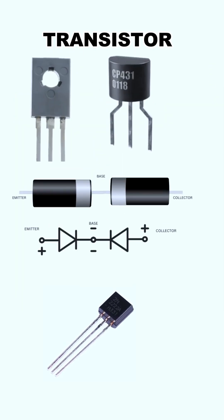A transistor consists of two PN diodes connected back to back. It has three terminals: emitter, base, and collector.